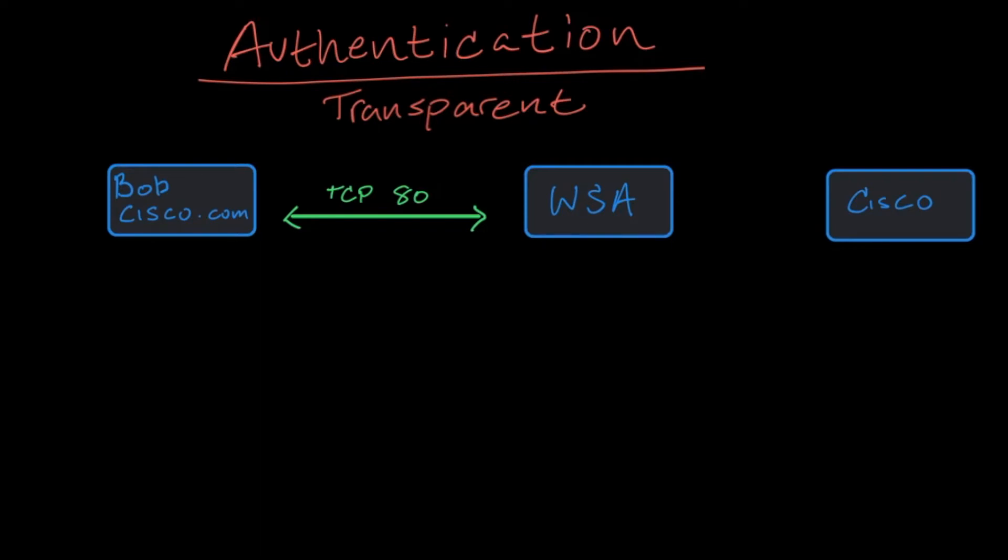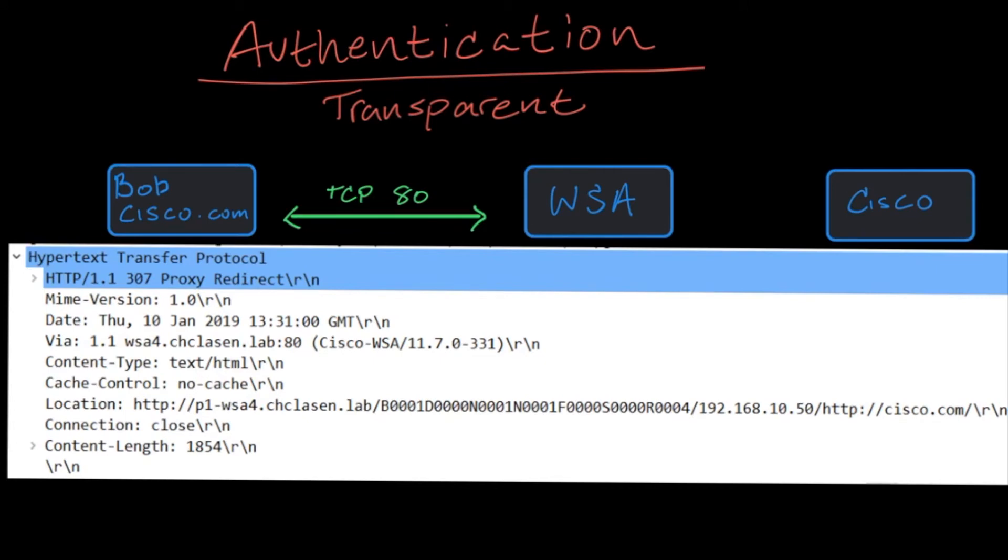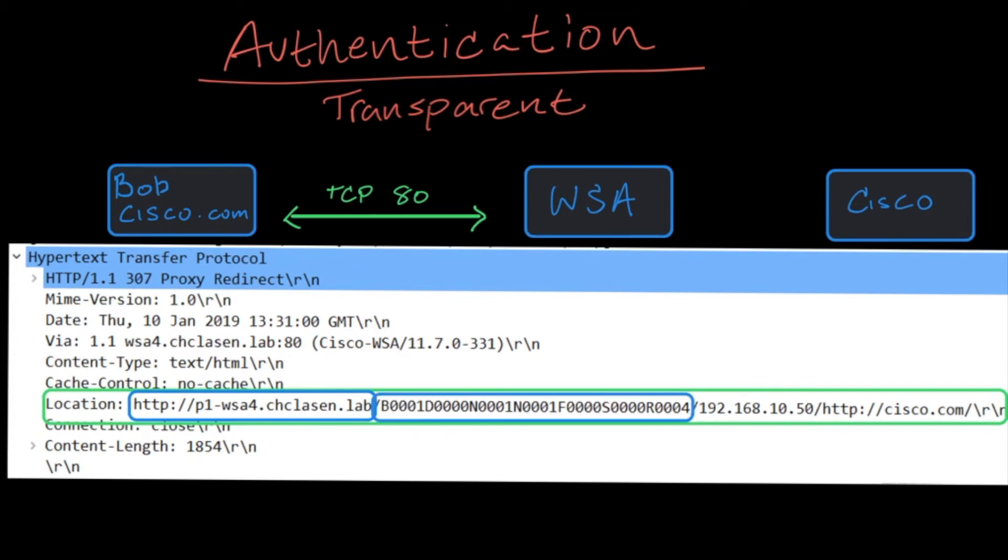When Bob sends the HTTP GET request for Cisco.com, the web security appliance responds with a 307 temporary redirect which contains a unique location header. This header redirects Bob to the configured redirect hostname of the web security appliance, which is built with a path from the UID, Bob's IP address, and the originally requested site.